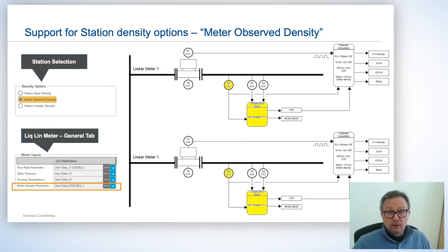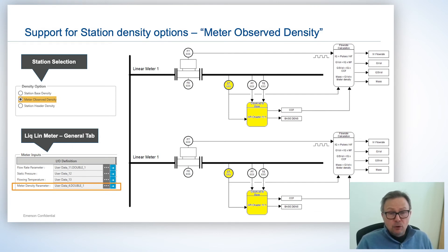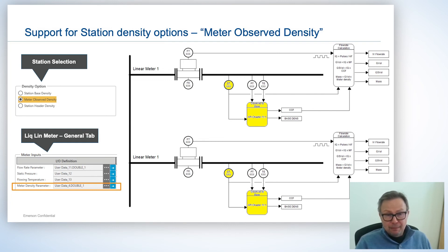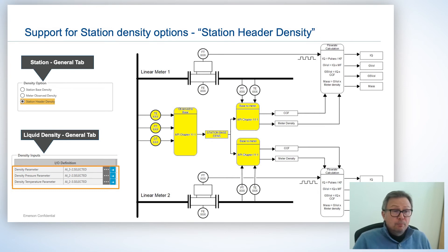Meter observed density is really the option we would use with a Coriolis meter, where the meter itself is not only giving us a flow rate but also giving us a density at the same pressure and temperature as the flow meter. So that's typically used in Coriolis meter applications.